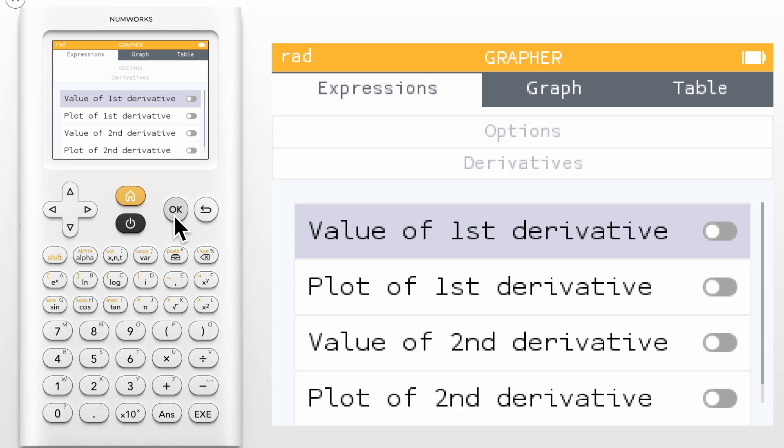Here you have many derivative options. To graph the first derivative, press OK on Plot of first derivative. Notice that the value of first derivative is automatically activated.